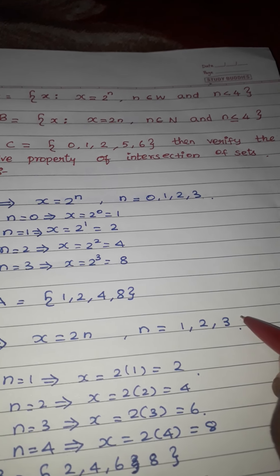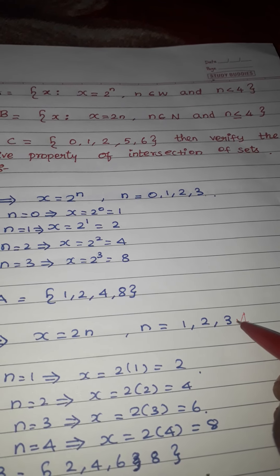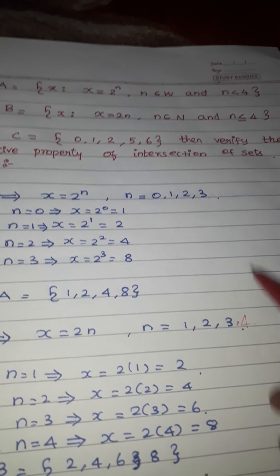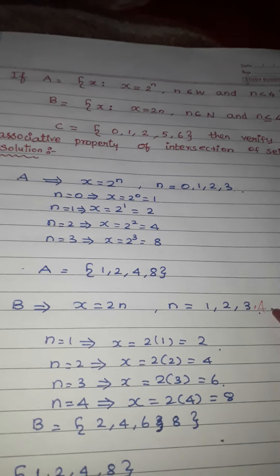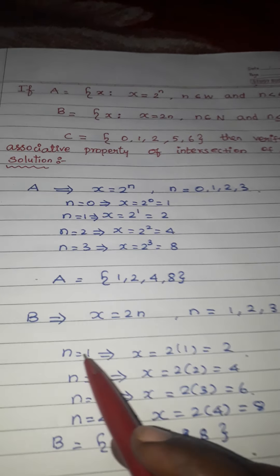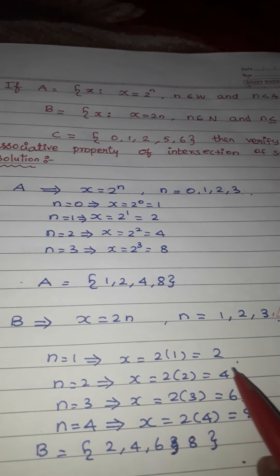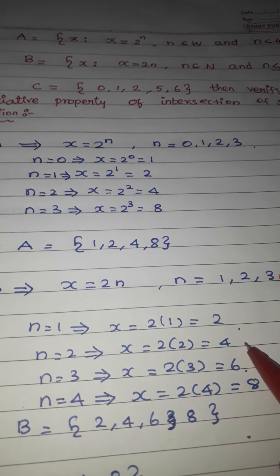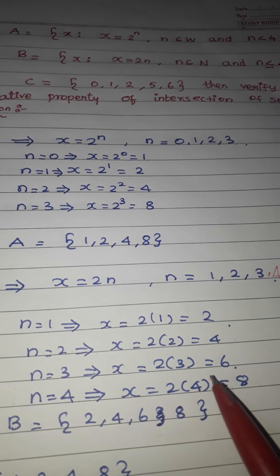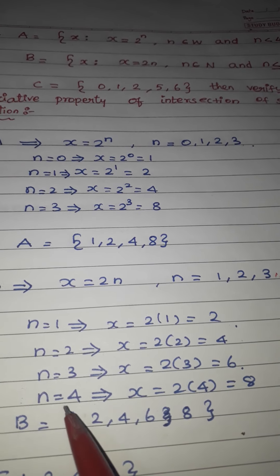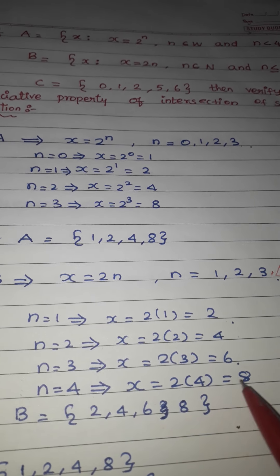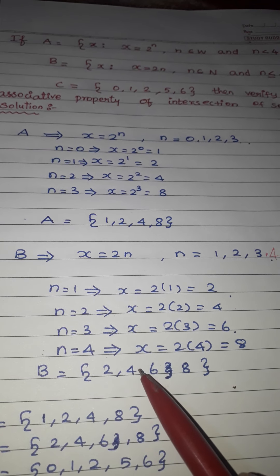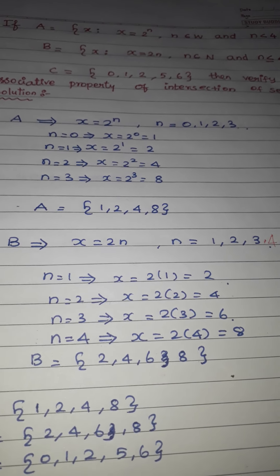We have to find values up to n=4 since n less than or equal to 4. Applying the formula: n=1 gives 2×1=2; n=2 gives 2×2=4; n=3 gives 2×3=6; n=4 gives 2×4=8. So B = {2, 4, 6, 8}.